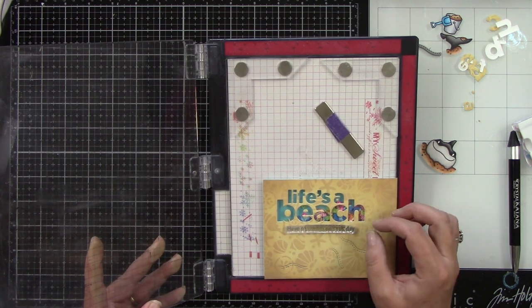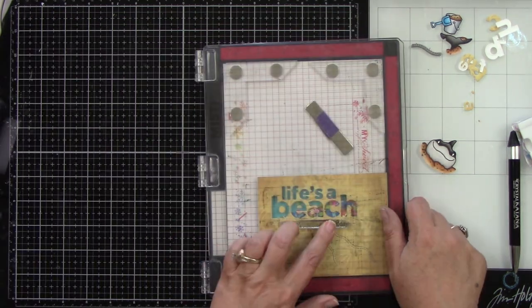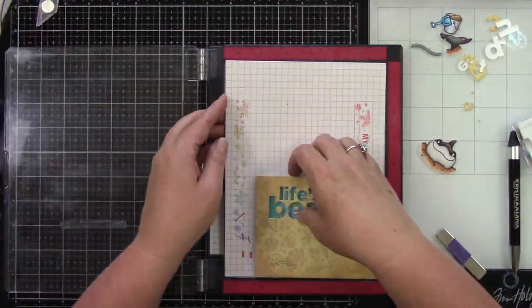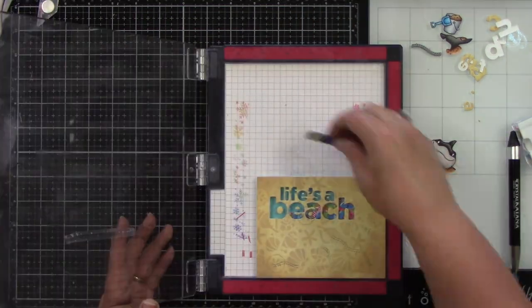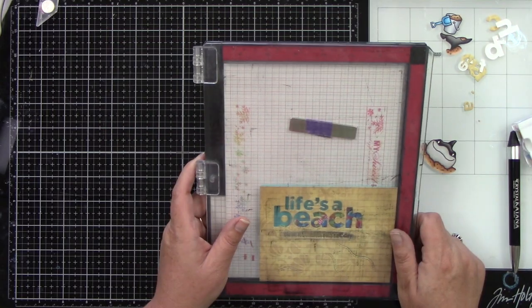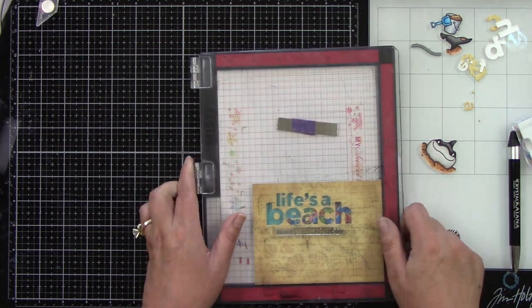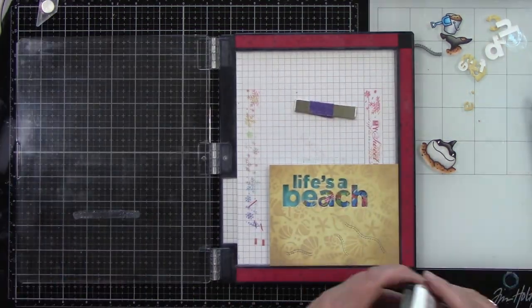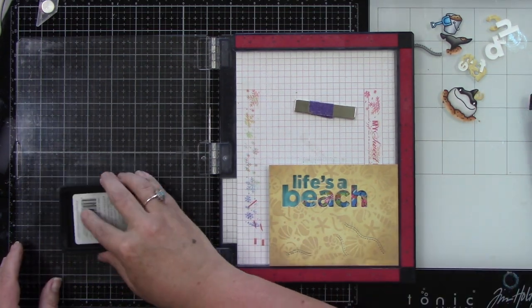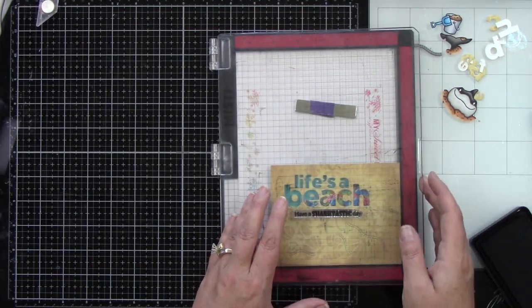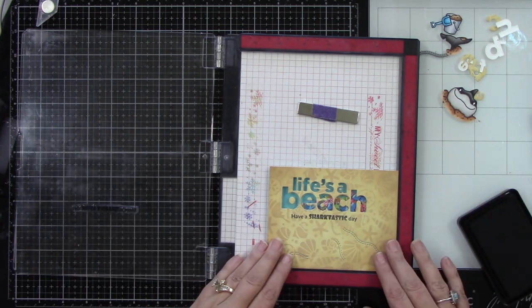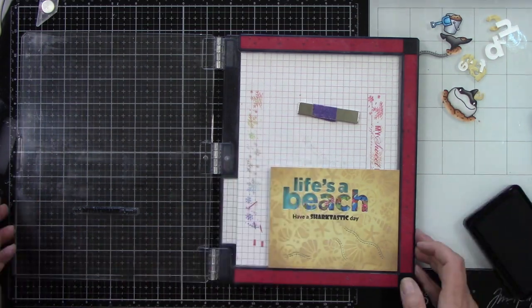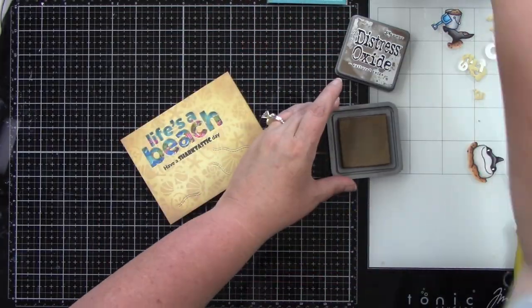In my Misti, I'm going to stamp my sentiment. Now, I will say I should have stamped this before I made my shaker card because it's just easier to have that card panel flat against your Misti. It totally worked out fine because I just so happened to be stamping on top of where I put foam tape. I would say stamp it before you put it all together. But I always get excited about my shaker cards and forget that I need to stamp a sentiment. This sentiment, of course, is from the stamp set in the card kit that says, have a shark-tastic day. I think it's so cute. I'm stamping that with black ink.